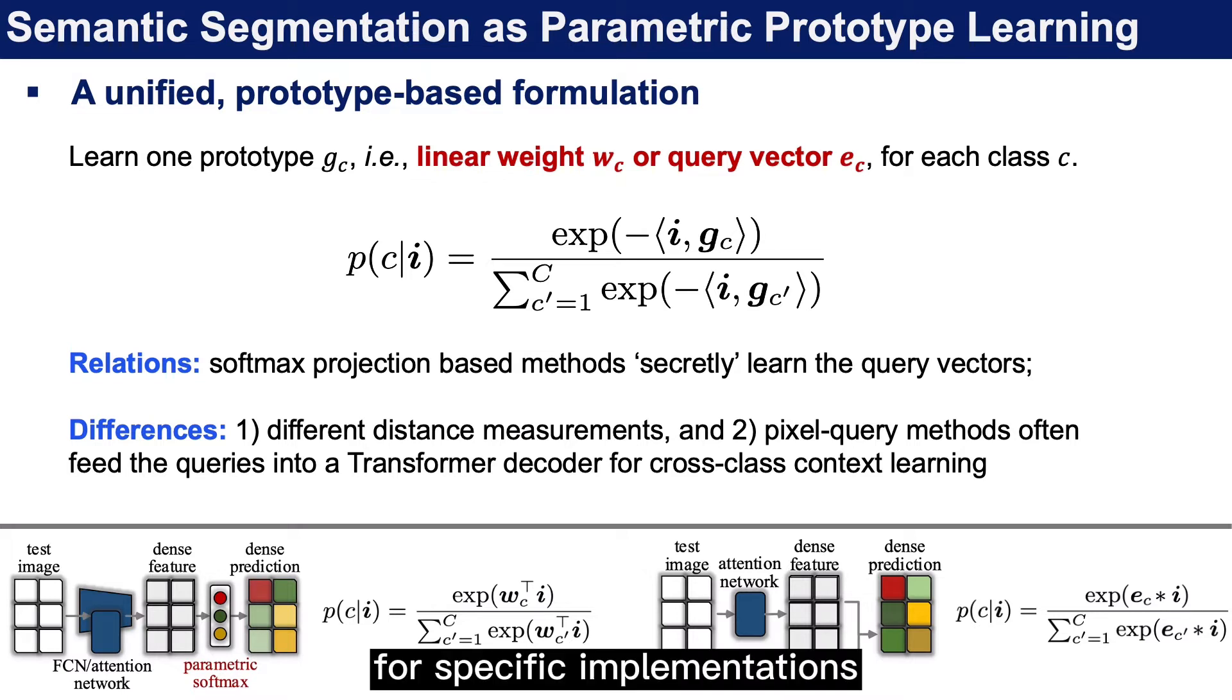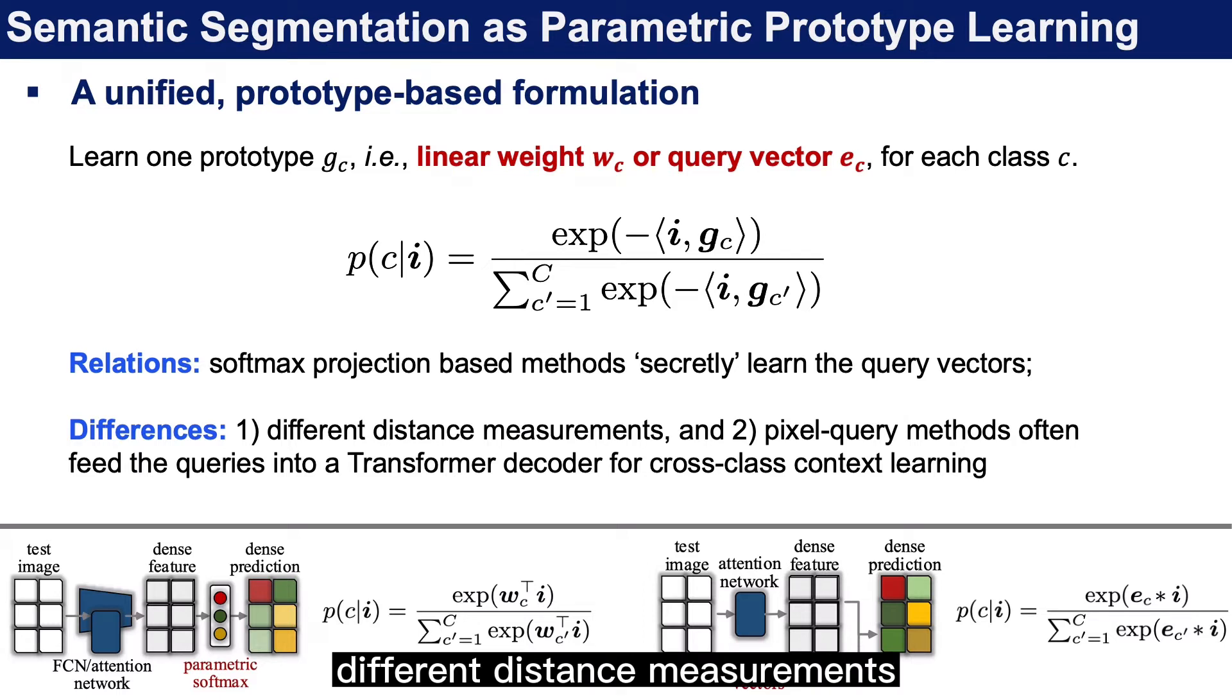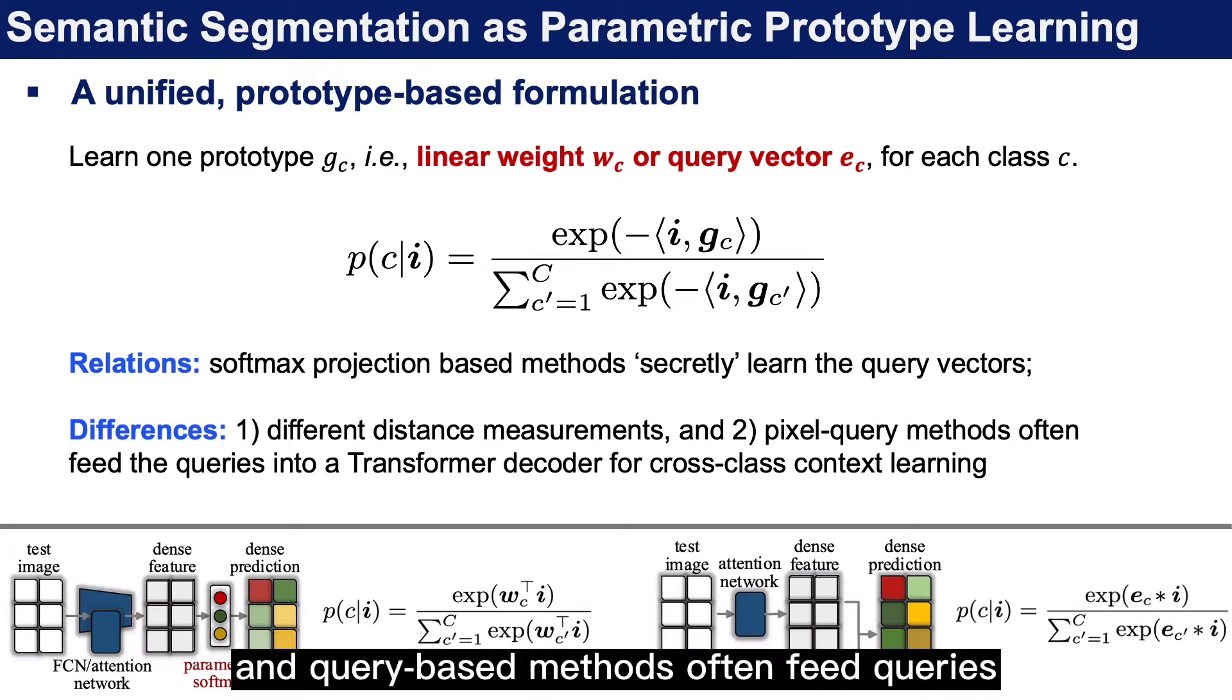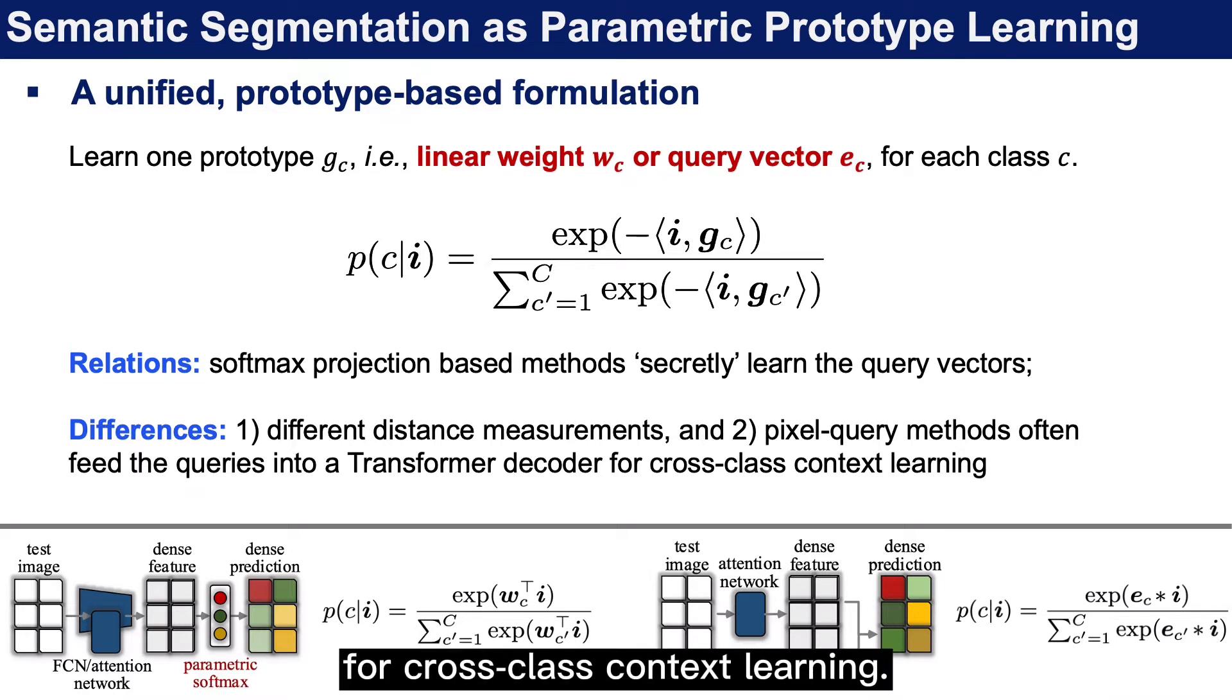For specific implementations, these two strategies usually use different distance measurements, and query-based methods often feed queries into a transformer decoder for cross-class context learning.